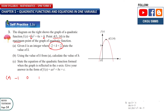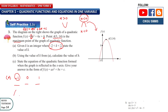Comparing f(x) = kx² + 6x + h to the general form ax² + bx + c, k corresponds to a. Since the graph has a maximum point, the shape is downward-opening, so a must be less than 0, meaning k < 0. Among the possible values (-1, 0, 1), only -1 is less than 0. Therefore k = -1.